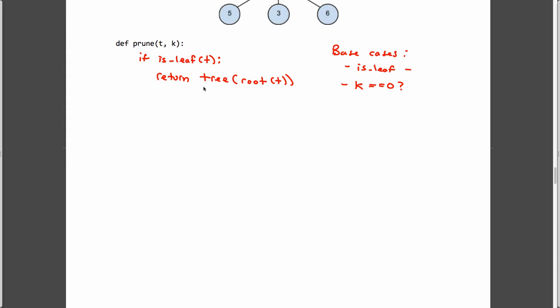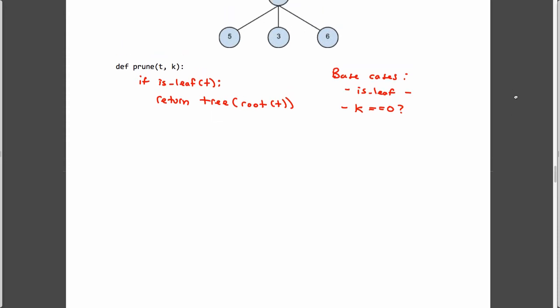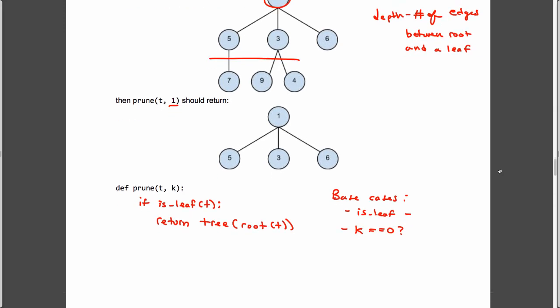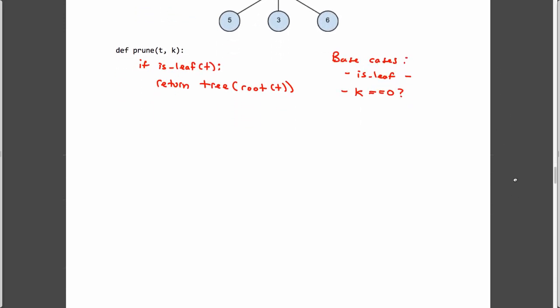then I can't go any deeper, and so I can just return a new tree, which has as its entry root t. Okay? So, I need to make sure that I'm constructing a new tree, because my problem statement said returns a new tree. So, I need to make sure that I'm always returning a copy of the tree that I initially passed in. And since we know it's a leaf, we don't need to do anything with branches, because t must have no branches. All right. So, that's that case taken care of.